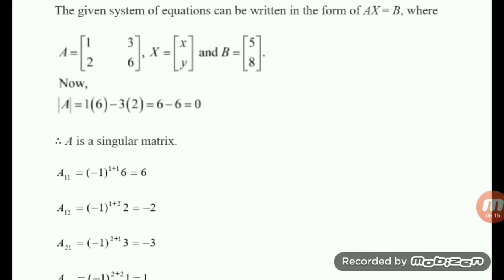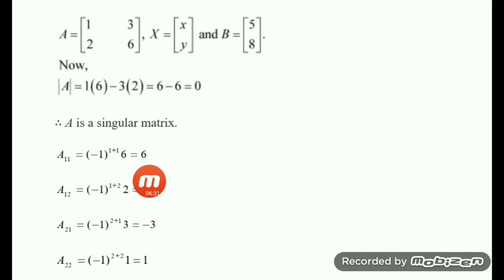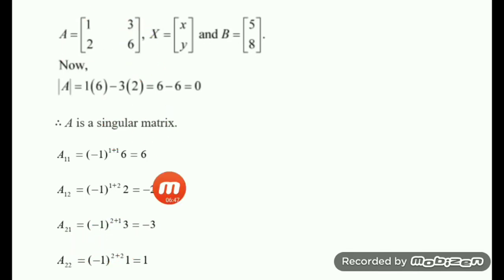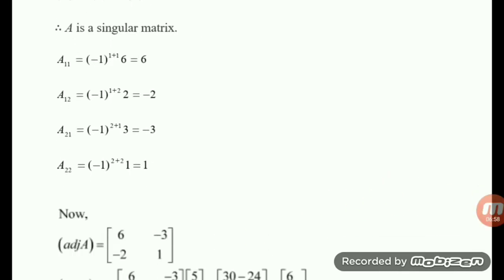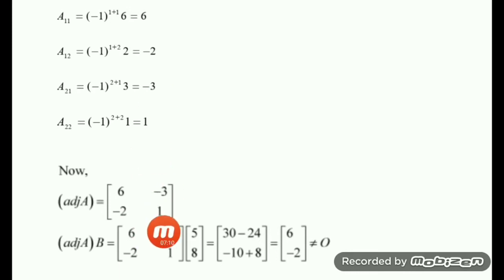Finding the adjoint: cofactor A11 is minus 1 to the power 1 plus 1 into 6 equals 6. Cofactor A12 is minus 1 to the power 1 plus 2 into 2 equals minus 2. Cofactor A21 is minus 1 to the power 2 plus 1 into 3 equals minus 3. Cofactor A22 is minus 1 to the power 2 plus 2 into 1 equals 1. Taking the transpose, the adjoint of A has first column 6, minus 2 and second column minus 3, 1.